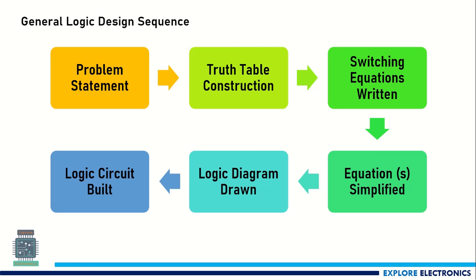Looking at the truth table, we need to write the Boolean expressions, also called switching expressions. Once we write those equations or expressions, we need to simplify them to the simplest form using different methods. After simplification, for those expressions or equations, we draw the logic diagram using logic gates. Once the logic diagram is drawn, that gives us the logic circuit for the particular problem statement. This is the sequence followed for any logic design.